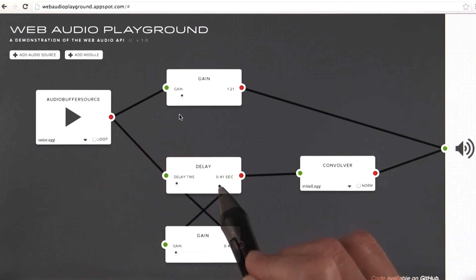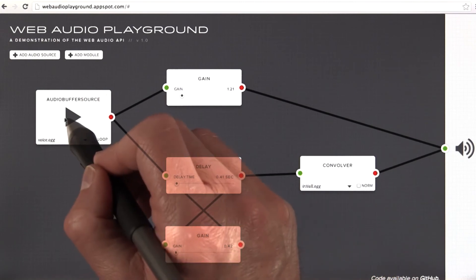You can create source nodes and add all these different processing nodes to your sound. And you can create that same slapback effect, like this.